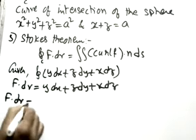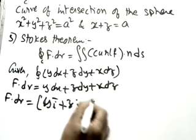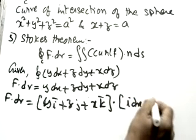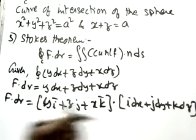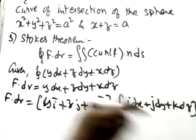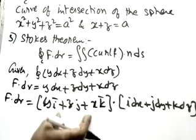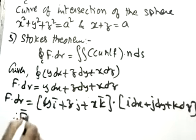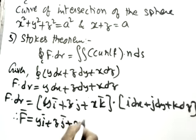Writing this in the form F dot dr: F dot dr = y dx + z dy + x dz. So we can identify F as yi + zj + xk. Therefore F vector equals yi + zj + xk. This is our first step — we have identified F.